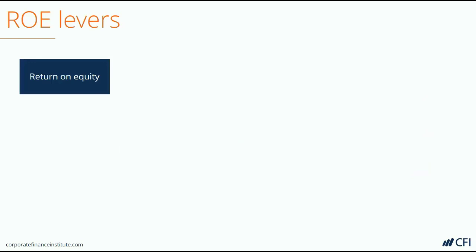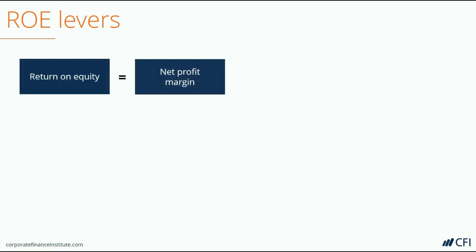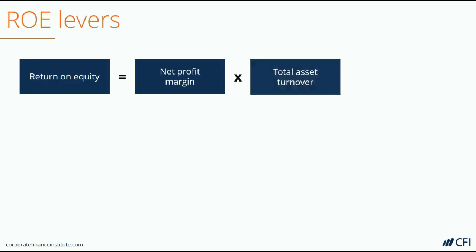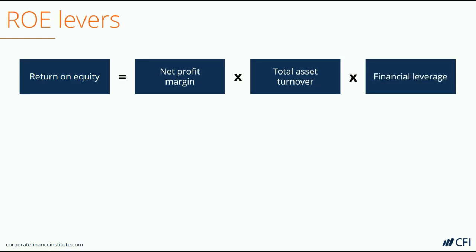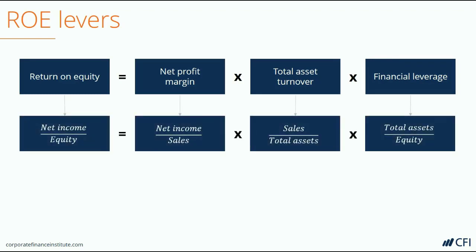If ROE holds the key to the story, what does it unlock? If we open up ROE, we see that it is made up of three primary ratios. ROE can be set equal to the net profit margin of the business, multiplied by its total asset turnover ratio, multiplied by its degree of financial leverage. If you look at the formulas for the three ratios and consider how to multiply fractions, you will see that sales and total assets cancel each other out, leaving us with our original formula of net income divided by equity, or ROE.